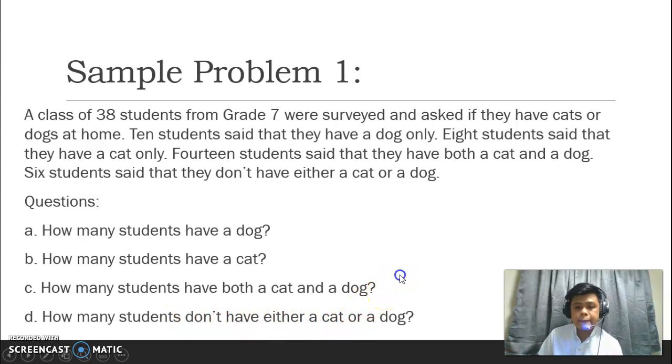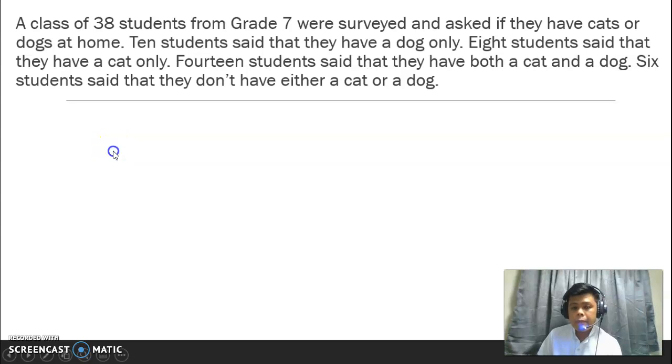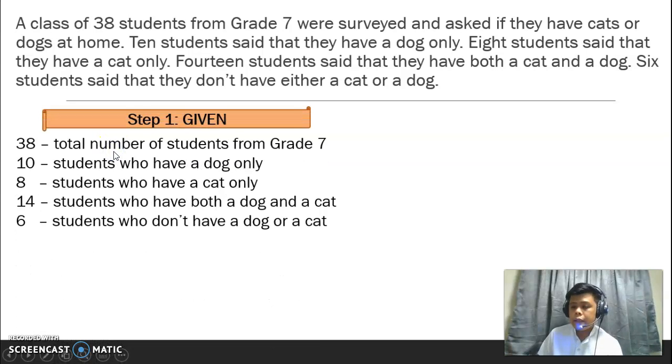Tapos, we have 4 questions. How many students have a dog? Letter B, how many students have a cat? Letter C, or the third question, how many students have both a cat and a dog? And letter D, how many students don't have either a cat or a dog? Let us answer. Mula sa problem na yan, ang step 1 ay ilista natin yung mga given. Ang total number ng students na tinanong, na grade 7 students na tinanong, is 38. 38 students. Sabi din diyan, 10 students have a dog only. 8 students have a cat only. 14 students have both a dog and a cat. And 6 students don't have a dog or a cat.